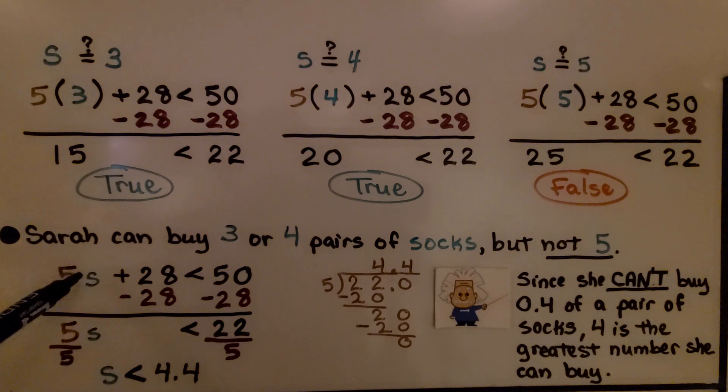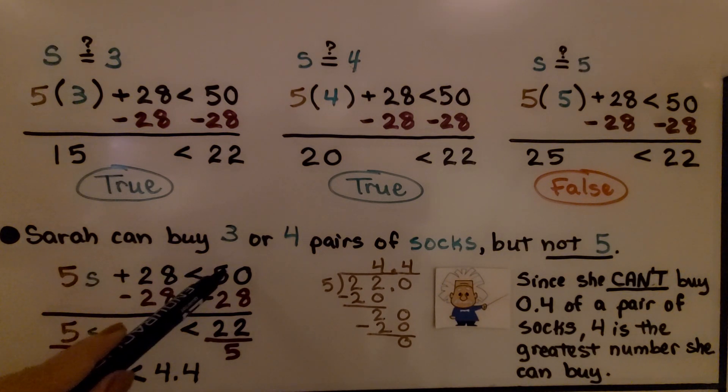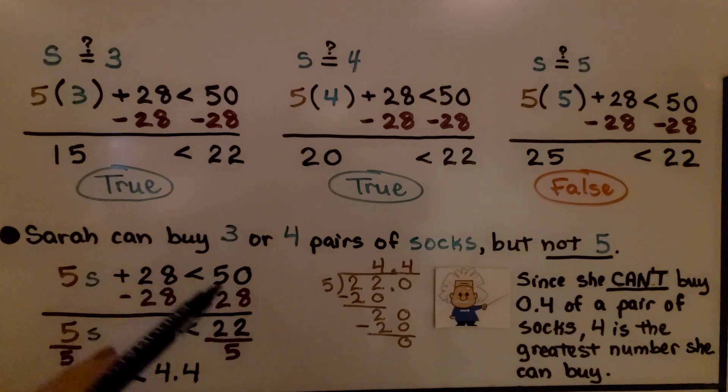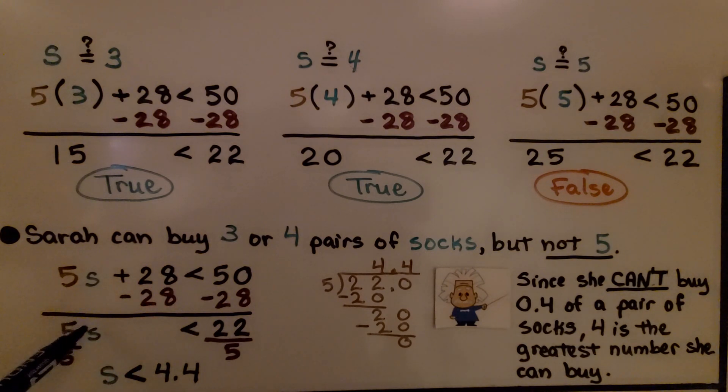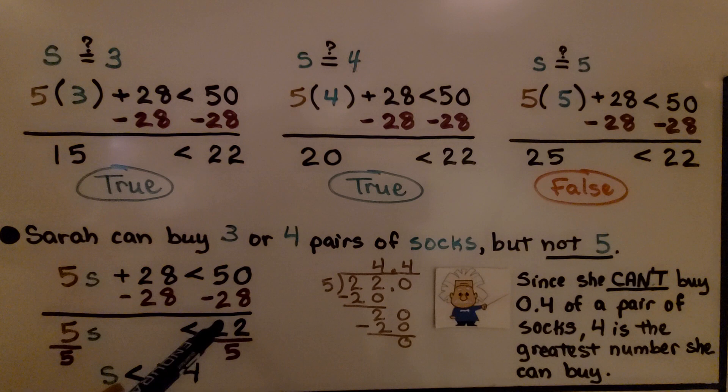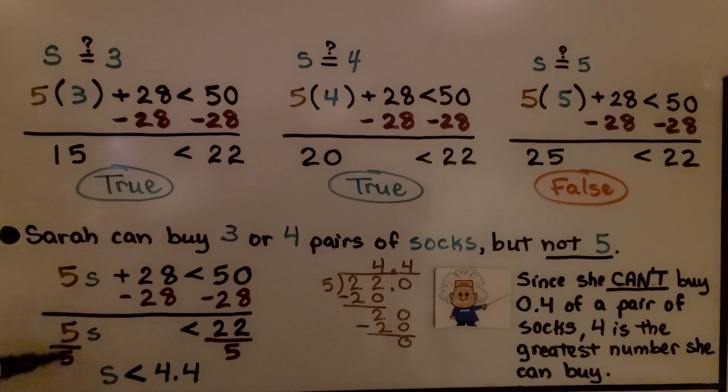We can do 5s plus 28 is less than 50 and subtract 28 from each side. We get 5s is less than 22. Now we divide both sides by this coefficient 5, and we have the same numerator and denominator, 5 over 5, so we get 1s is less than 4 and 4 tenths.